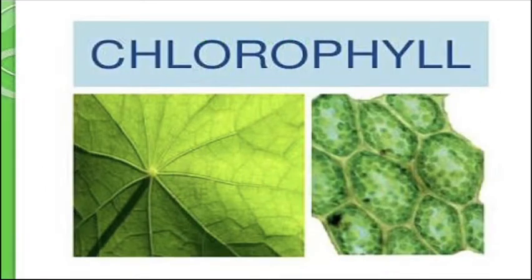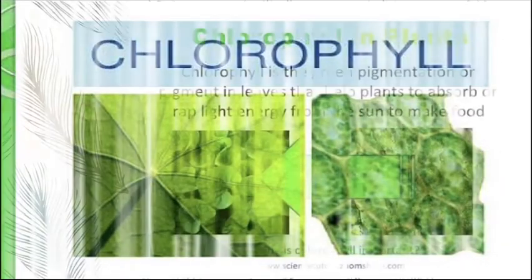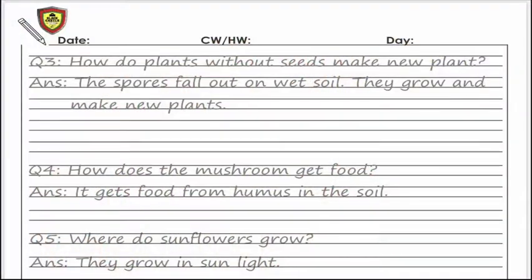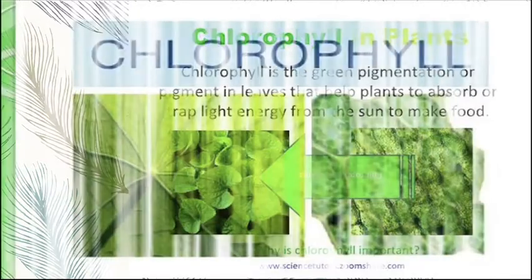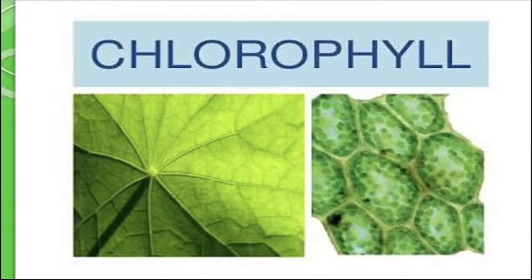Question number two: where do plants grow? Plants kahan pe ughte hain? Very well done — plants grow in wet, shady, dry, or hot places. Jo plants hote hain woh kisi bhi jagah pe — shady, asayadar, dry, ya hot places pe grow karte hain.